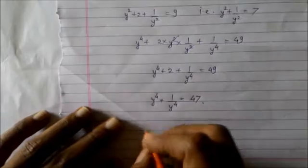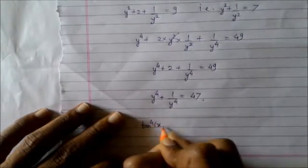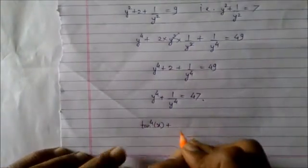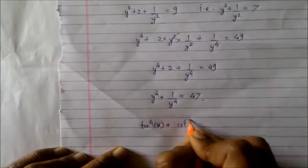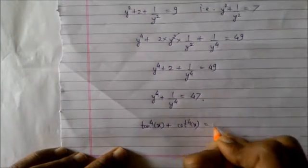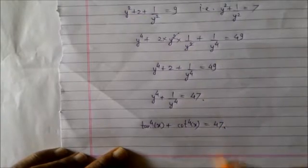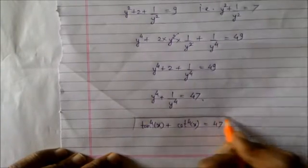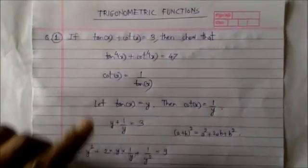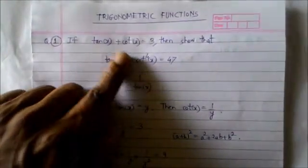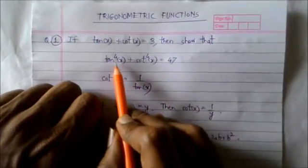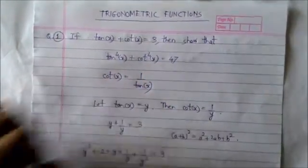Now I will resubstitute the values of y and 1/y back in. So I can write tan⁴x plus cot⁴x — remembering that cot x is 1 upon tan x — equals 47. Hence we have shown that if tan x + cot x = 3, then tan⁴x + cot⁴x = 47.